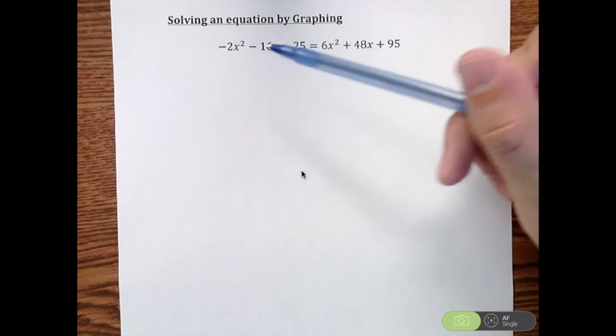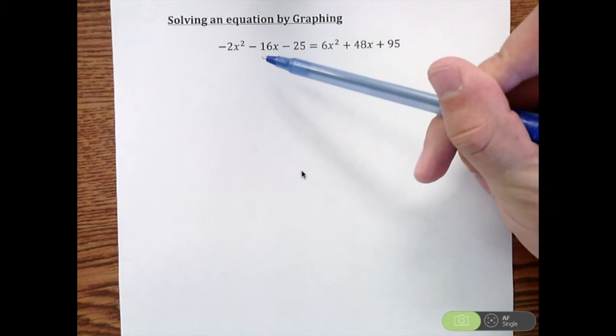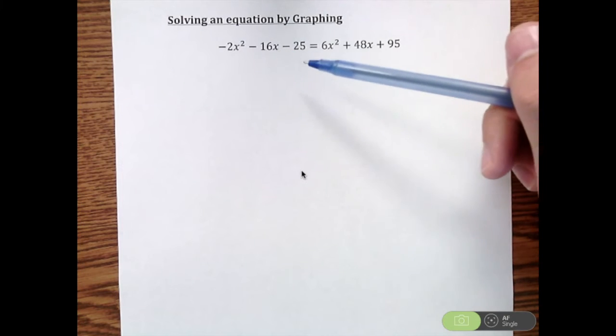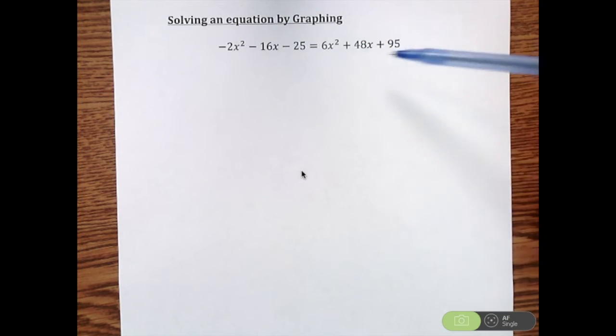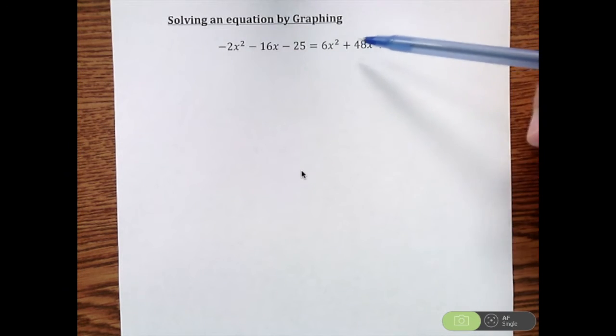So in this example, we have a quadratic on the left side of the equal sign, negative 2x squared minus 16x minus 25. On the right side of the equal sign, we have 6x squared plus 48x plus 95.